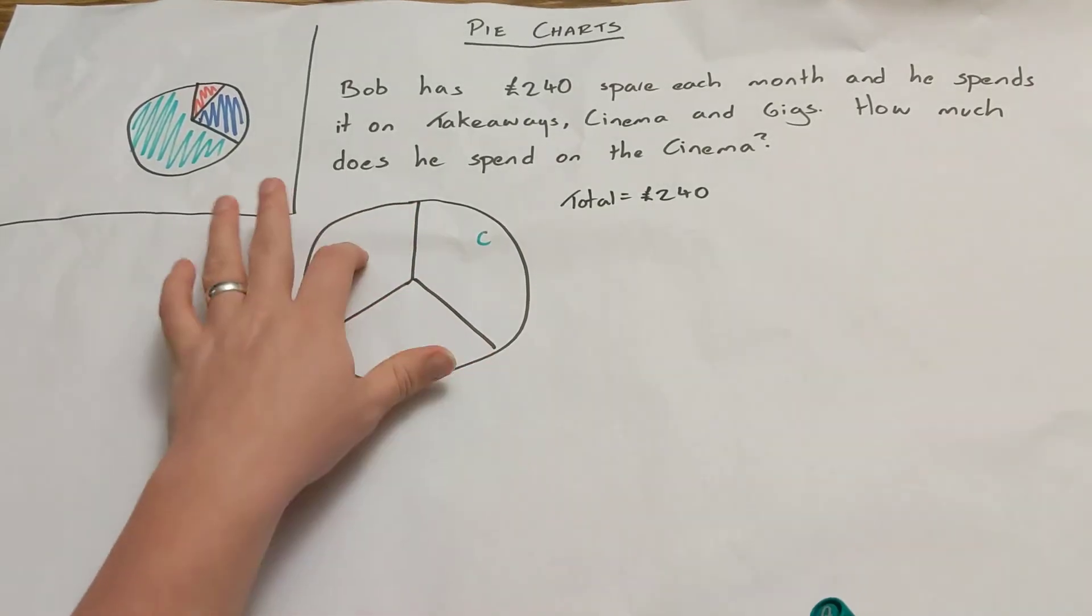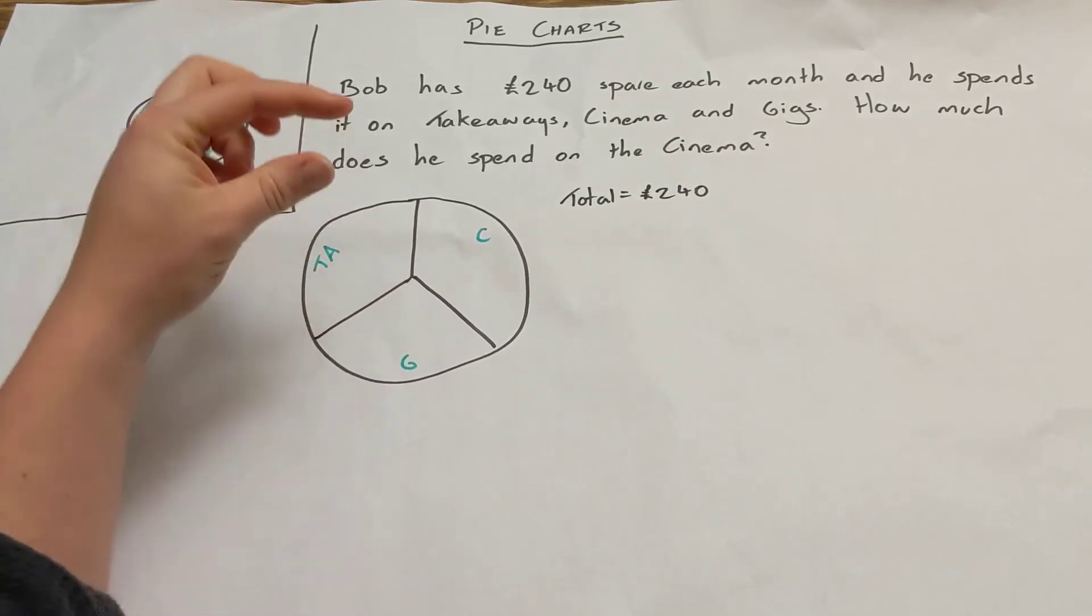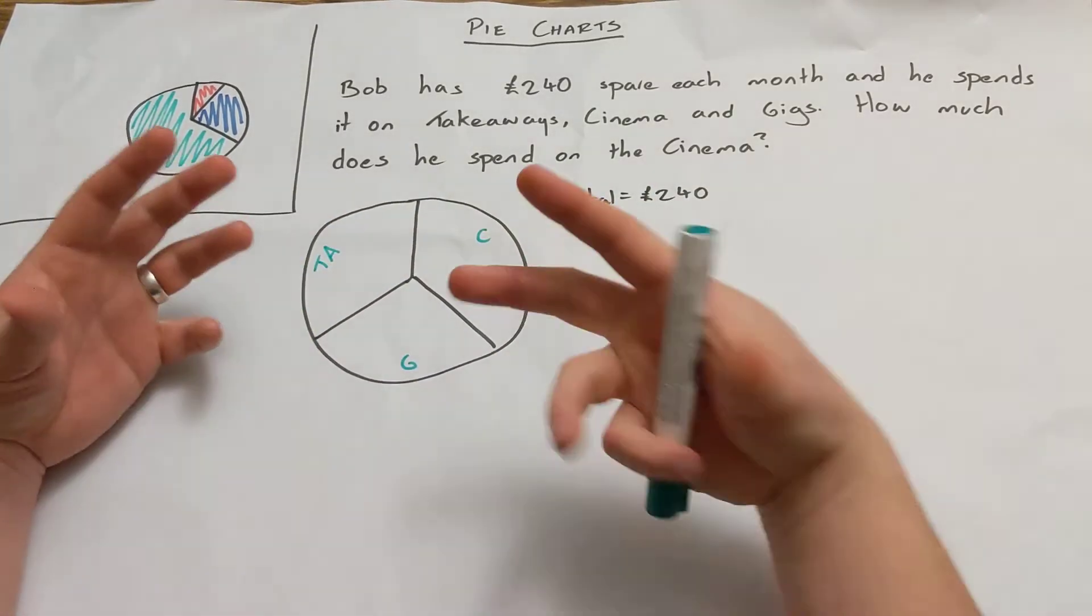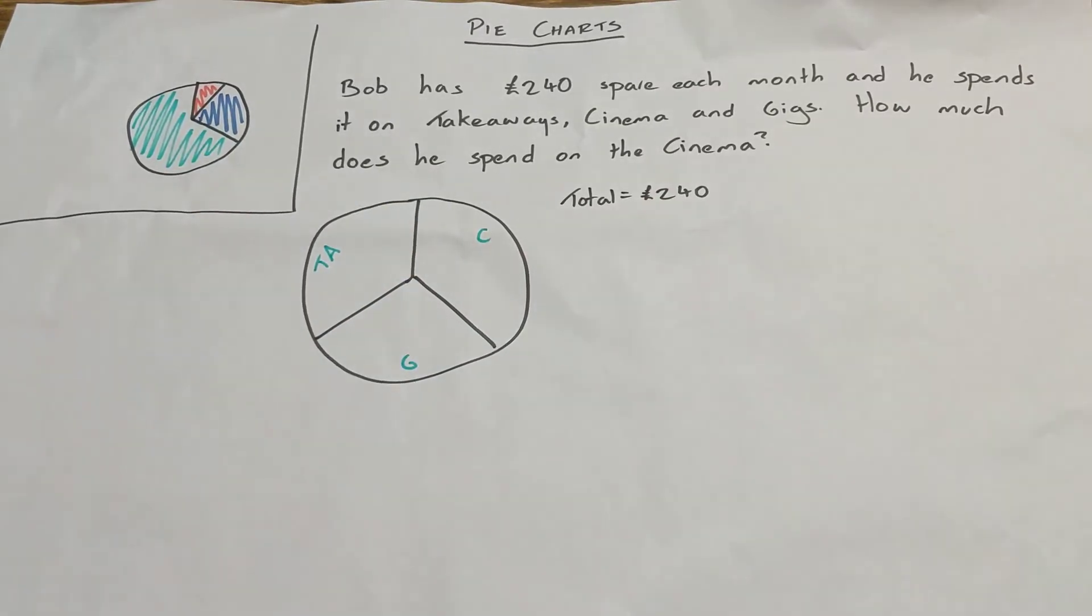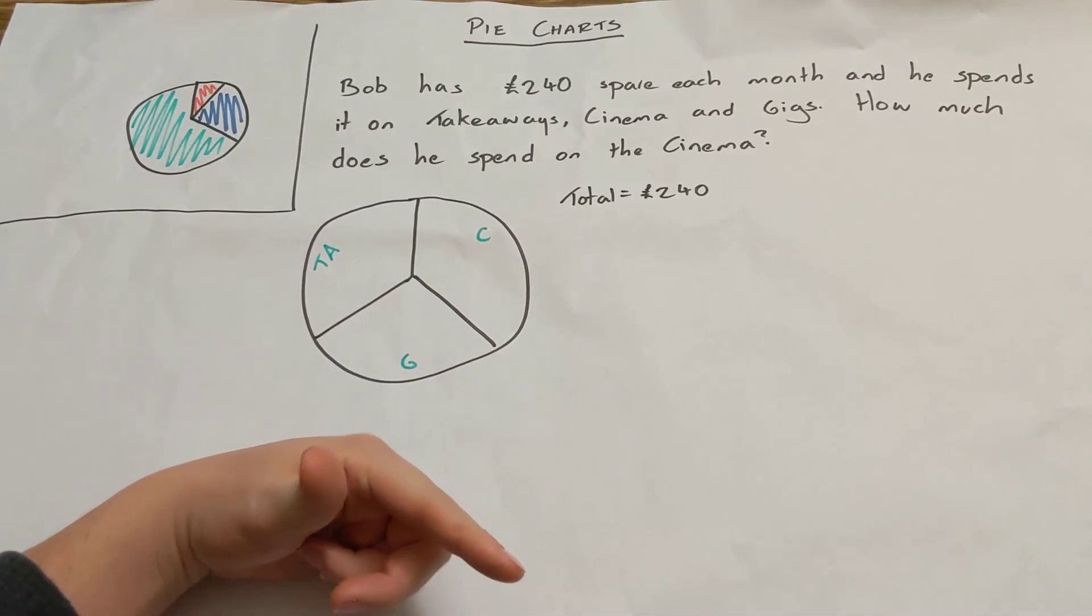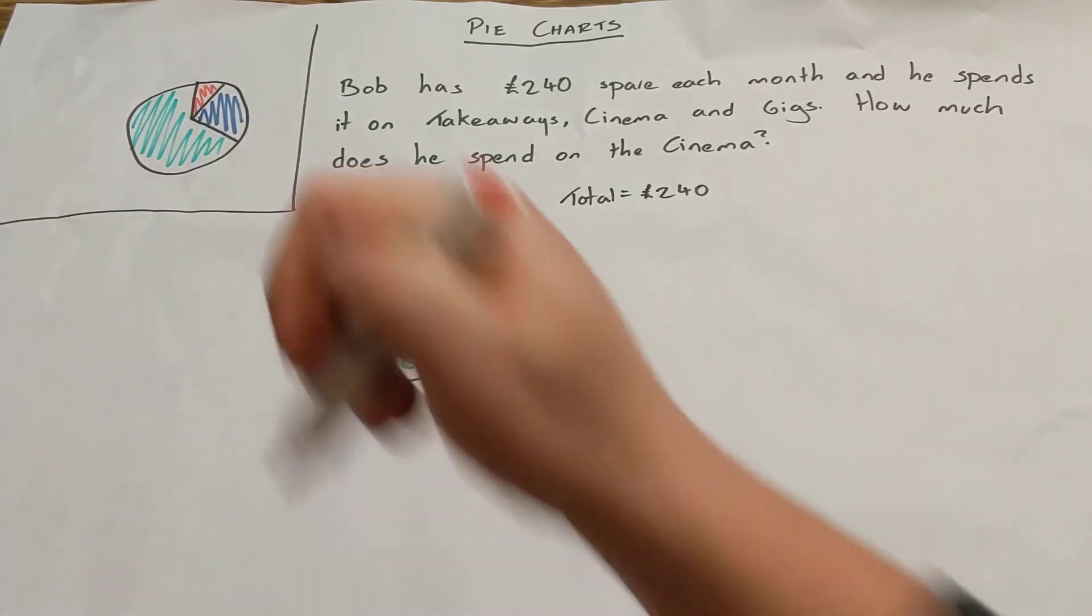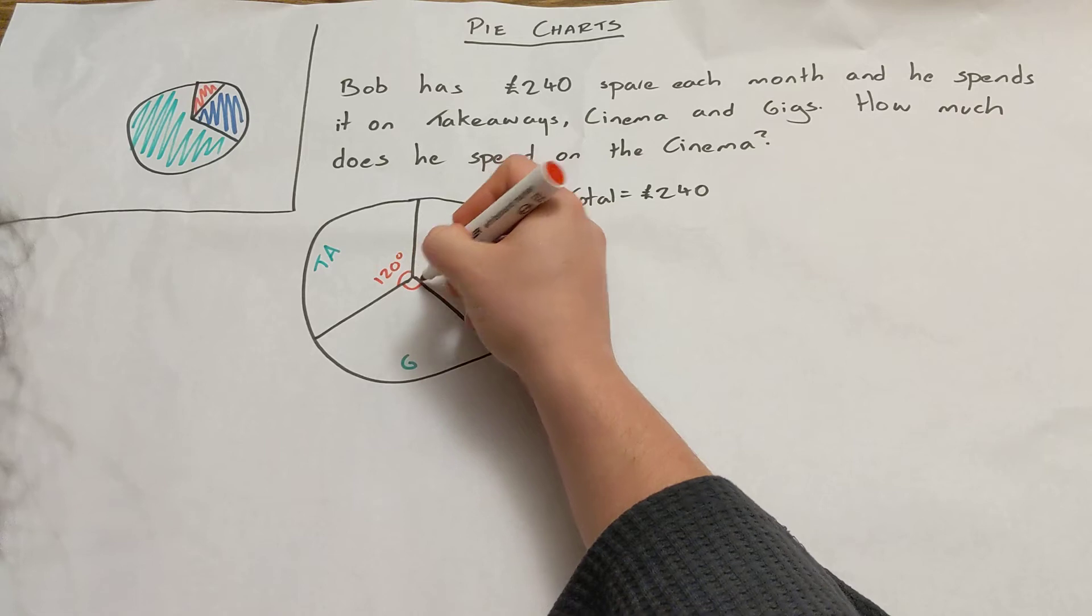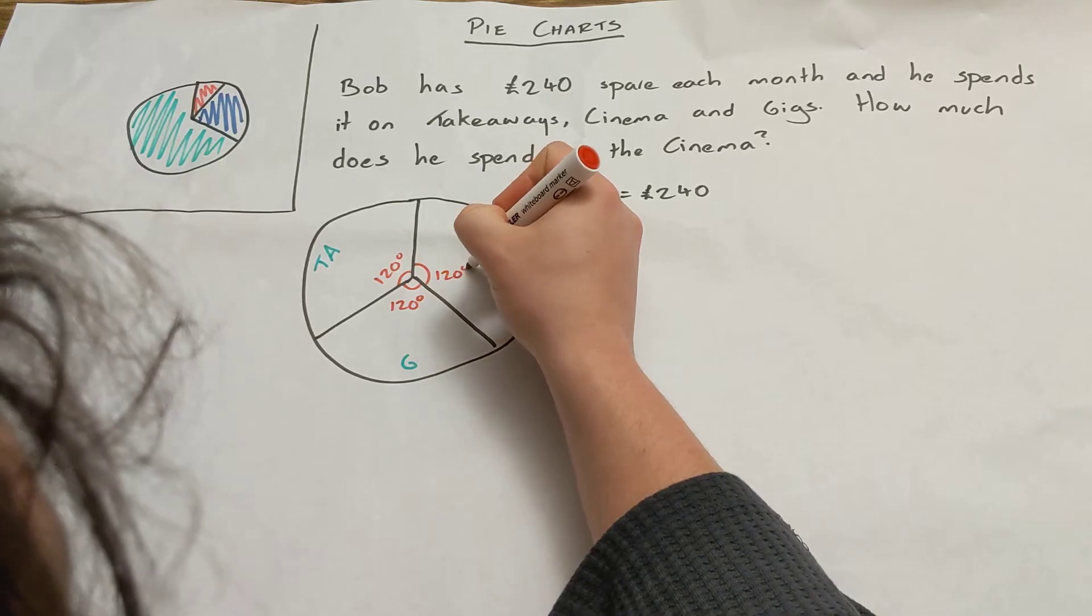What this allows us to do basically is this is split up into fractions, isn't it. So if we knew what fraction of the pie chart was takeaway, well we just have to work out what fraction of the total money that is. If we knew what fraction of a pie chart was cinema, well we just have to work out the same fraction of the money. And the way we can work out what fraction each of these represents is that normally they will in this case have the angle marked on them.